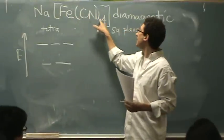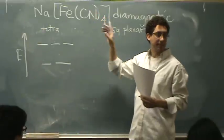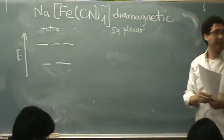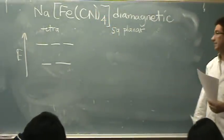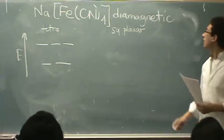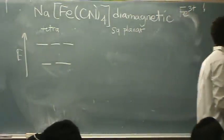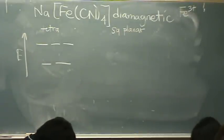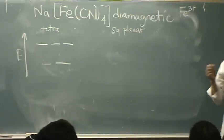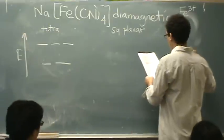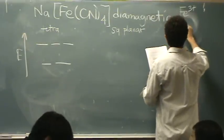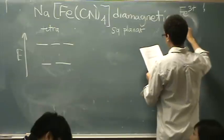So, it's FeCN4 minus. Then you name it in Latin, if possible, with the -ate ending. So I also need iron 3 plus. Iron is in the 8th column. So, since it's in the 8th column, 8 minus 3 is 5 electrons, or d5.